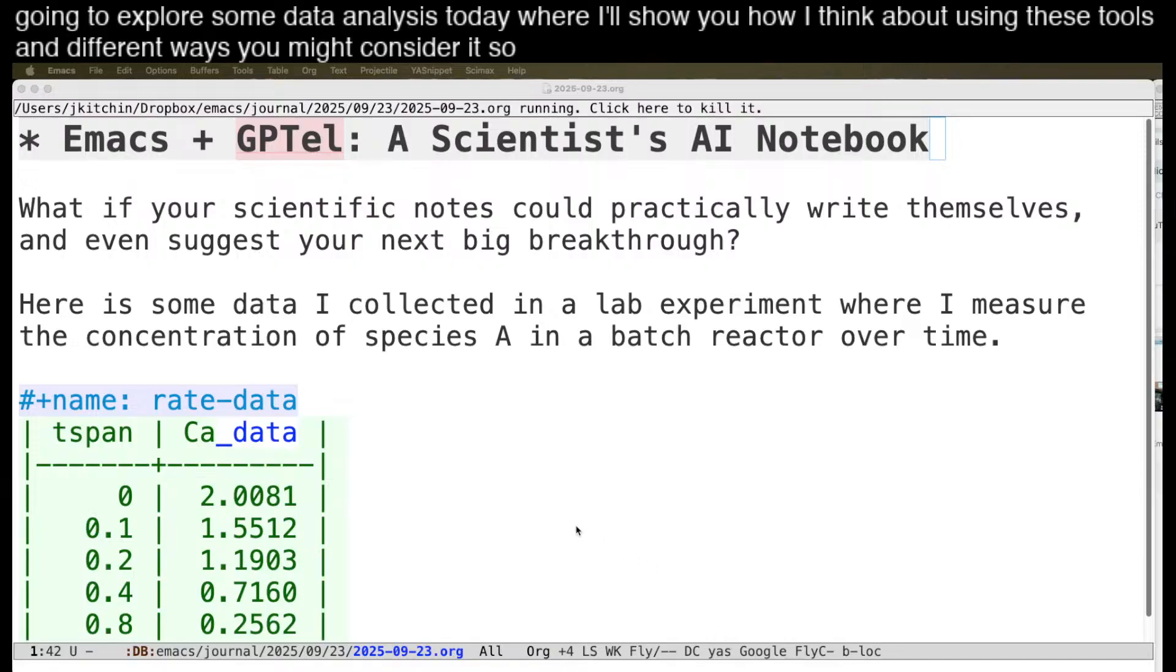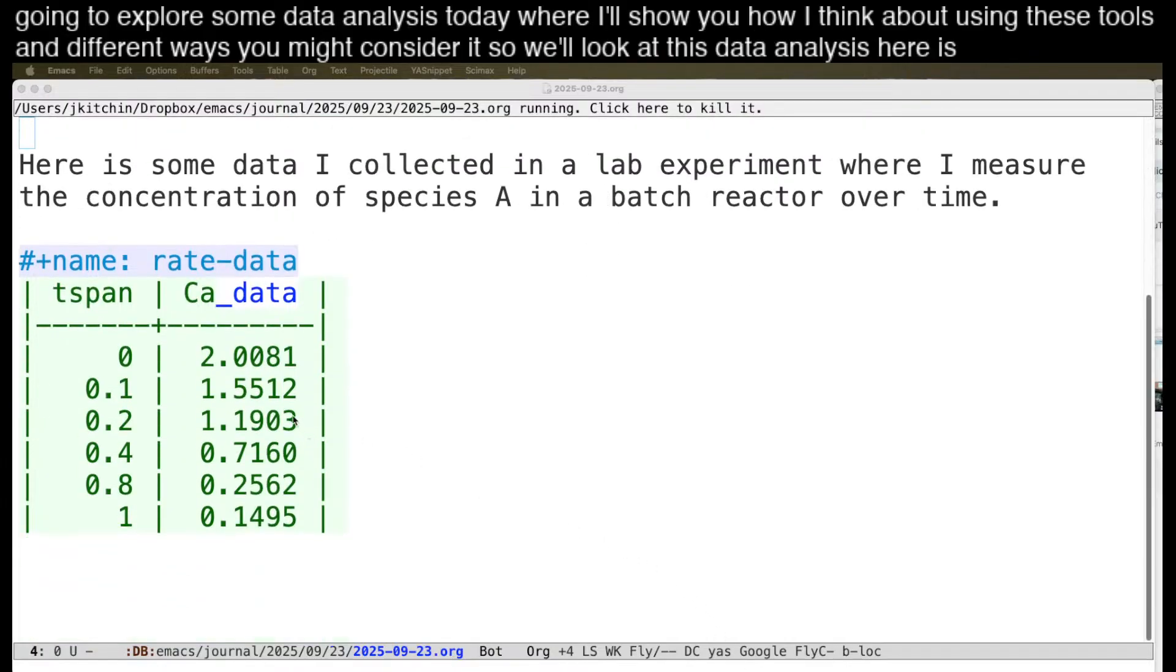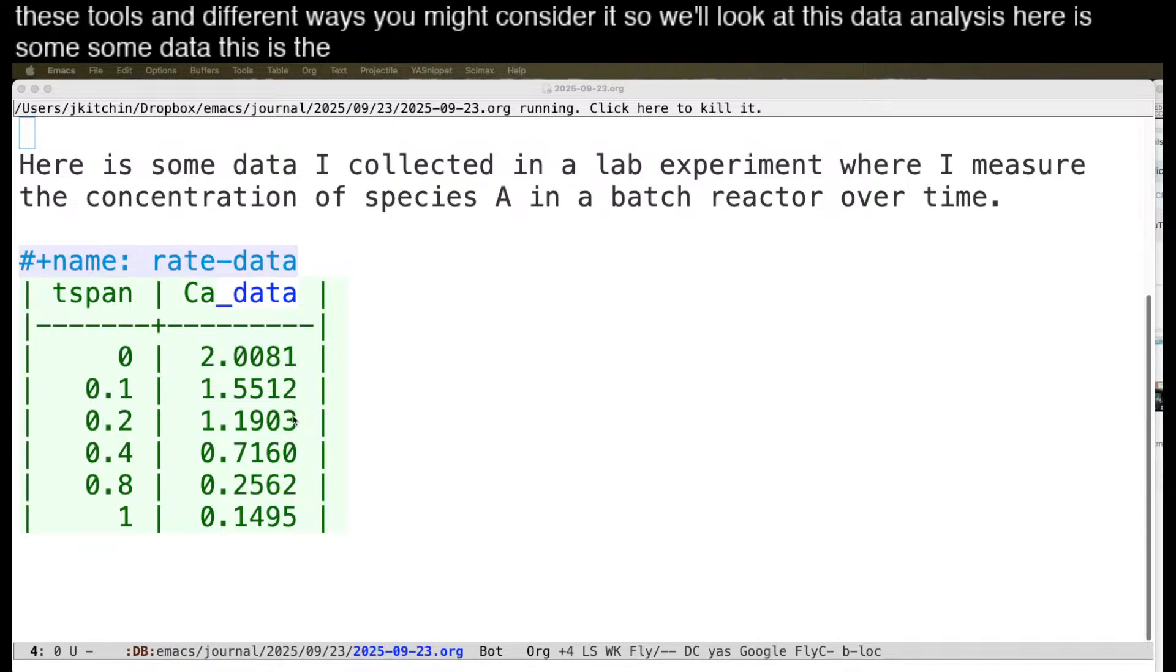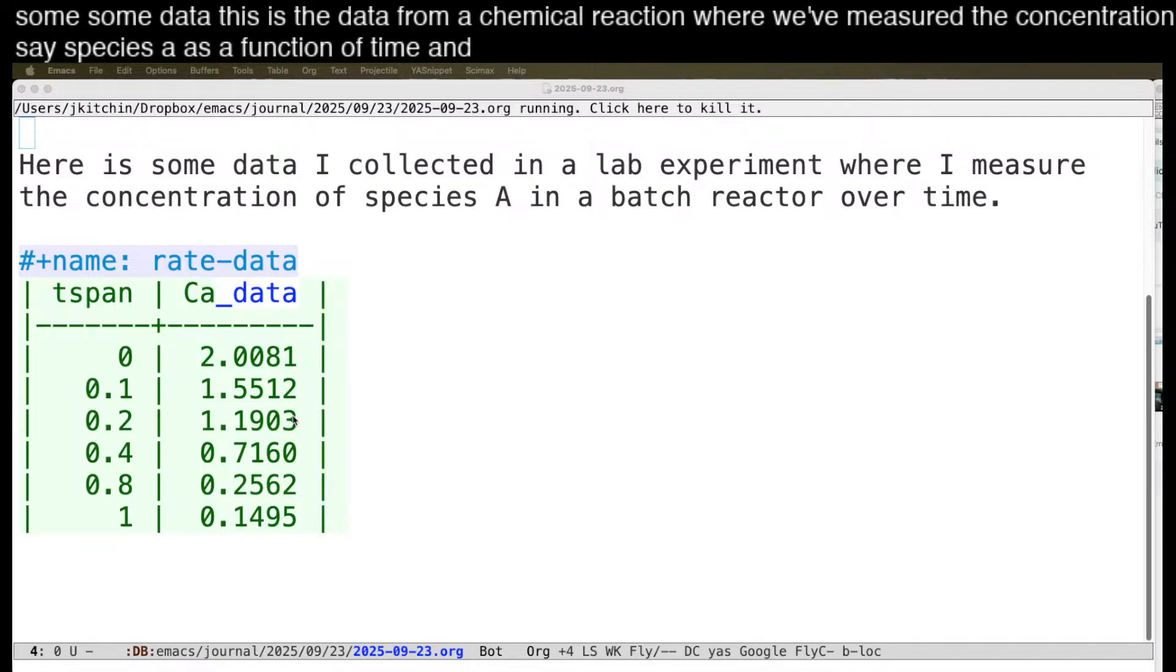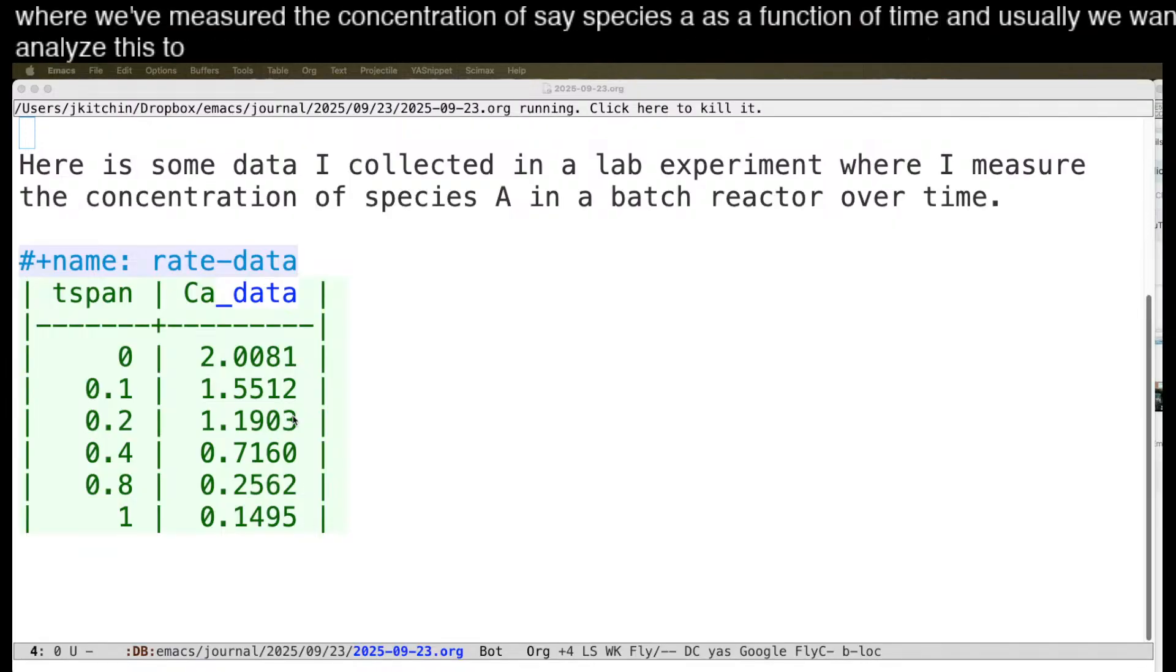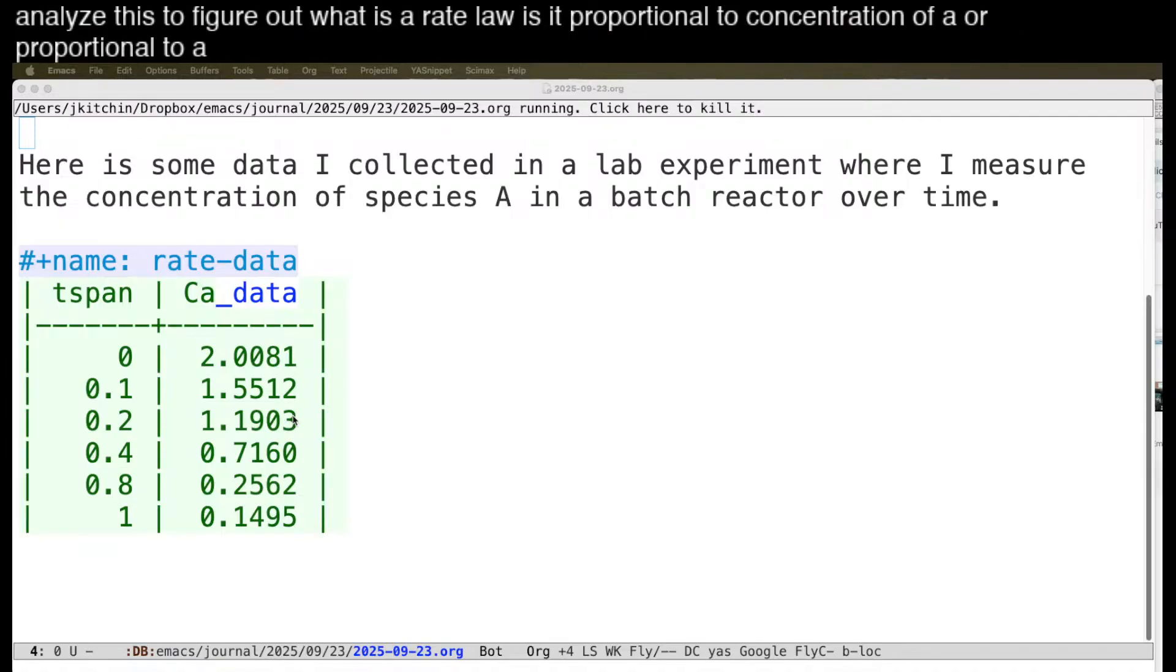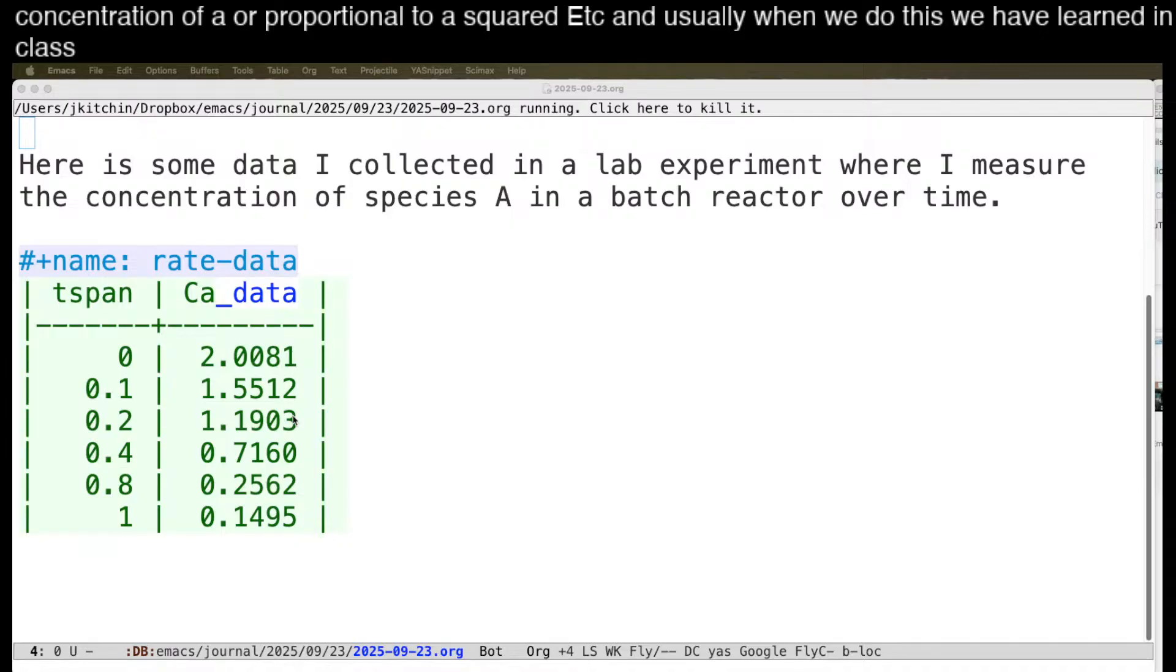We'll look at this data analysis. Here is some data. This is the data from a chemical reaction where we've measured the concentration of species A as a function of time. Usually we want to analyze this to figure out what is a rate law. Is it proportional to concentration of A or proportional to A squared, et cetera. Usually when we do this, we have learned in a class what some of those rate laws are, and then we'll postulate a rate law and do some analysis.